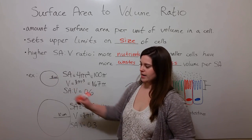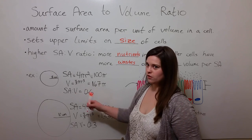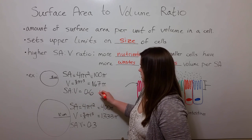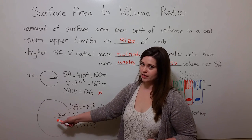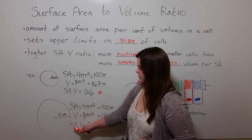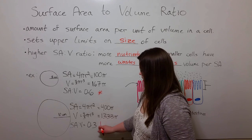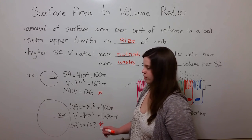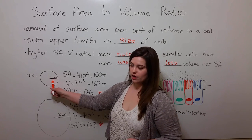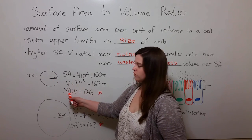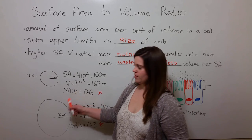So for the 5 micron radius cell, the surface area to volume ratio is 0.6. For the larger cell, with a radius of 10 microns, the surface area to volume ratio is smaller. It's 0.3. So what that means is that the smaller cell has more surface area per unit of volume than the larger cell.